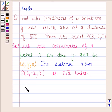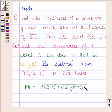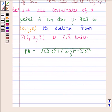Now we will find PA by using distance formula. PA is equal to square root of (3-0)² + (-2-y)² + (5-0)². This is equal to square root of y² + 4y + 38.